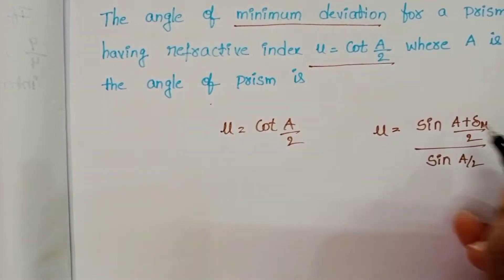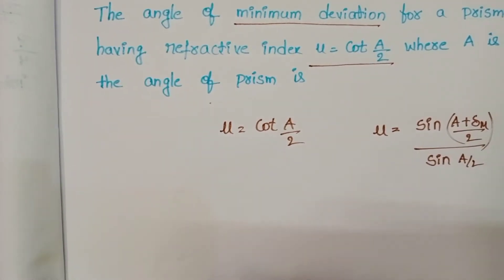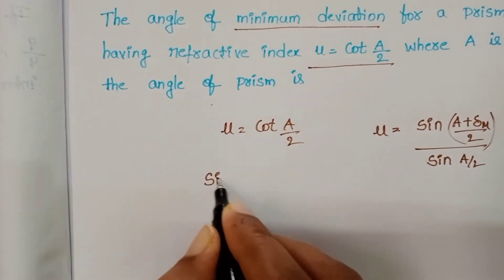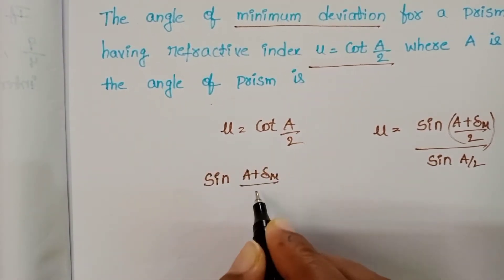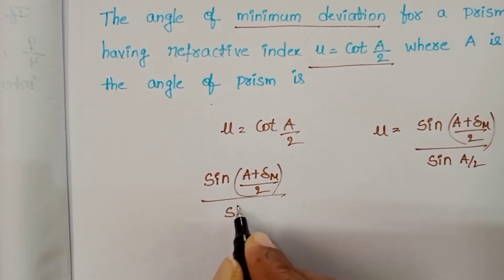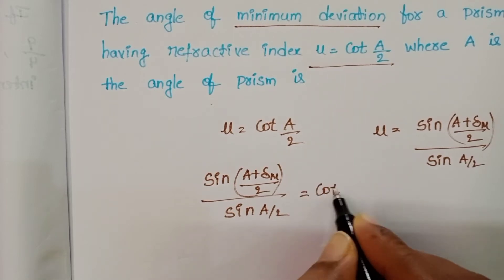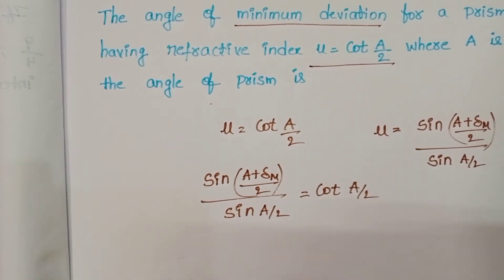This is the formula to find out the refractive index of a prism. So, sin((A + δm)/2) divided by sin(A/2) equals cot A/2.